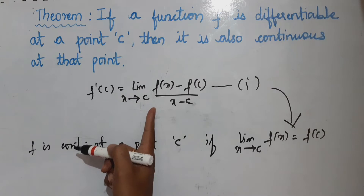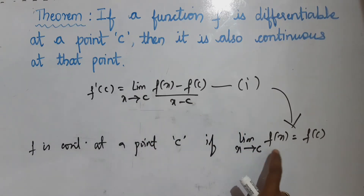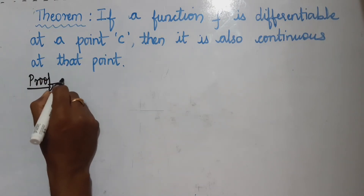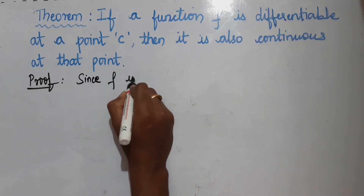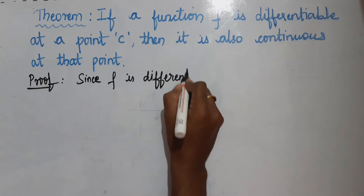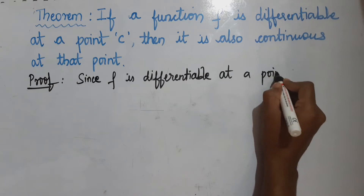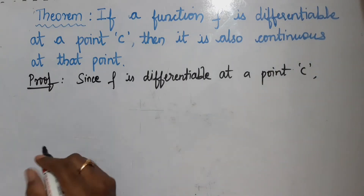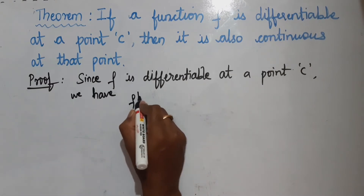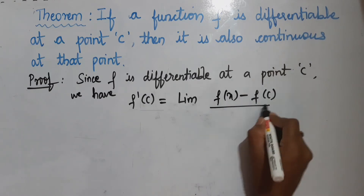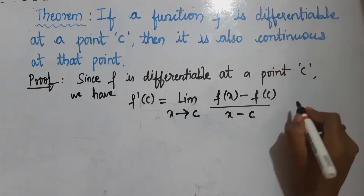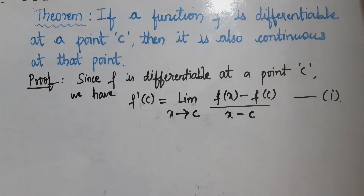Using these definitions, I have to prove that a differentiable function is continuous. Proof: Since f is differentiable at a point c, we have f'(c) = limit of [f(x) − f(c)] divided by [x − c] as x tends to c. Take this as equation number 1. Note that x tends to c implies x is not equal to c.